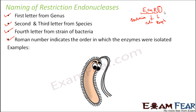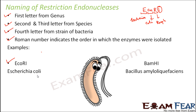EcoRI is derived from Escherichia coli — E from Escherichia, CO from coli, R is the rough strain, and 1 is the first enzyme extracted from E. coli. Next is BamHI: B is from Bacillus, AM is from amyloliquefaciens, so BAM comes from that bacteria, H represents the strain, and 1 is for the first enzyme extracted.